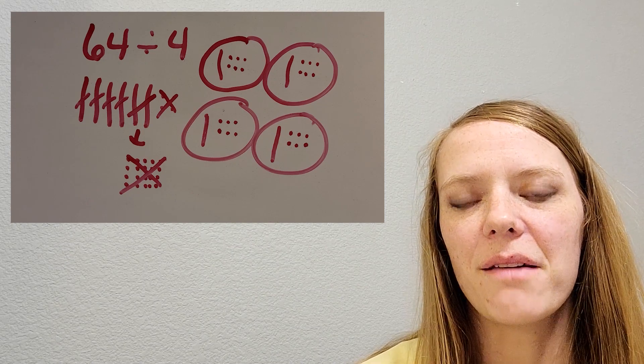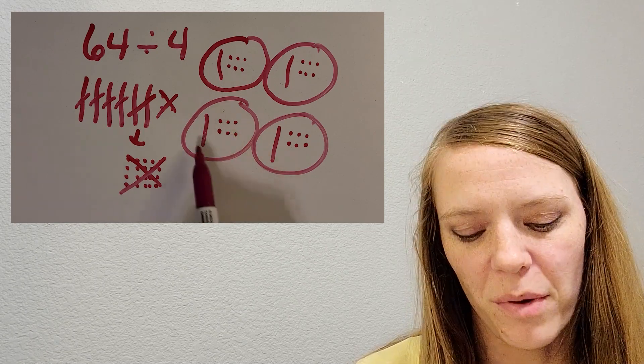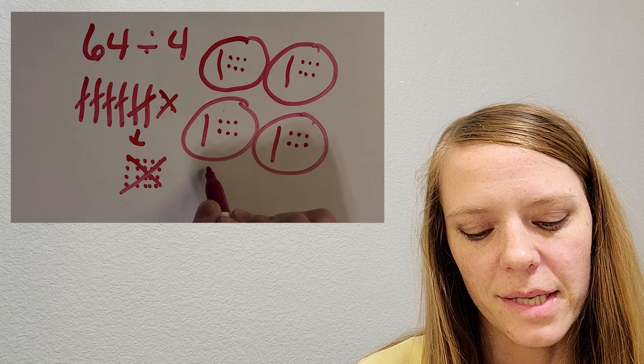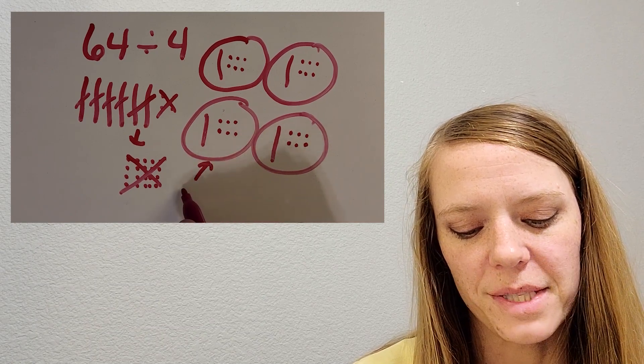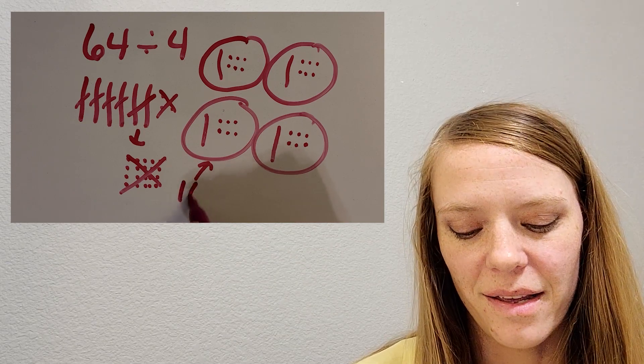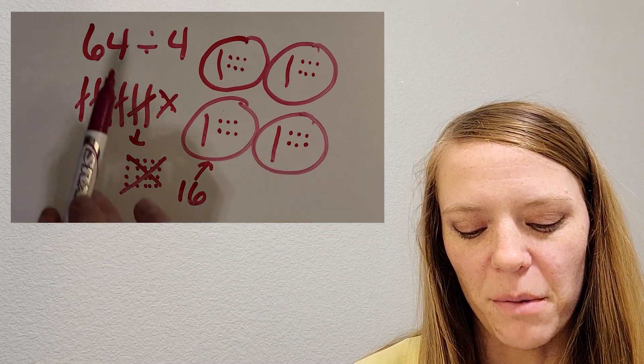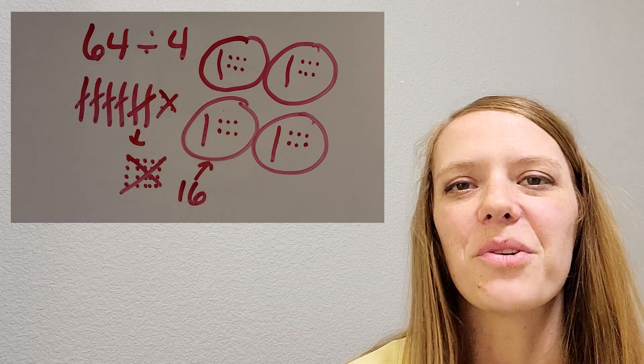Okay. I think you're counting up one group right now. So let me double check with you. So I'm seeing 10 and then one, two, three, four, five, six. Put it together, it's 16. So 64 divided by four equals 16. Great job.